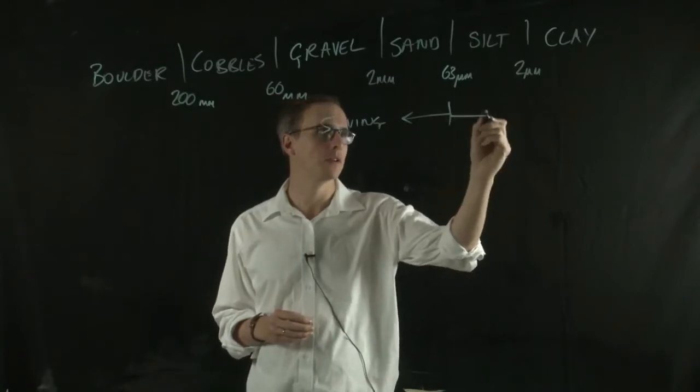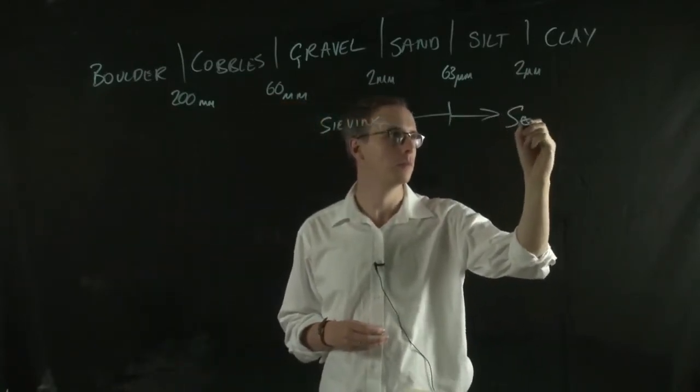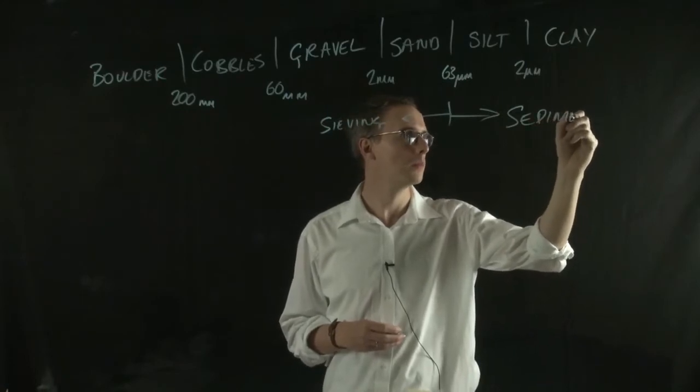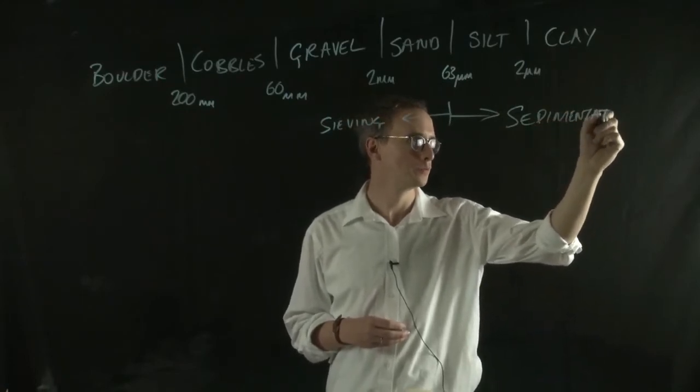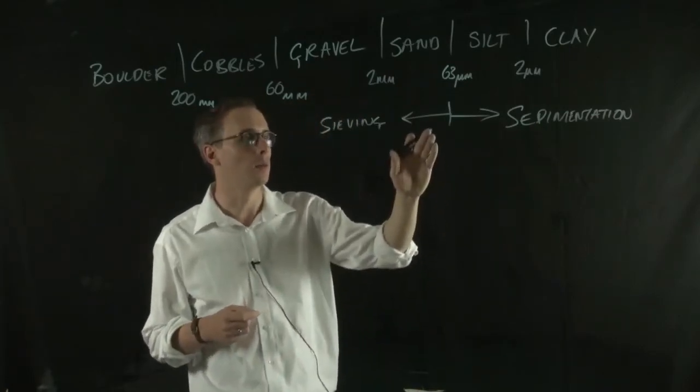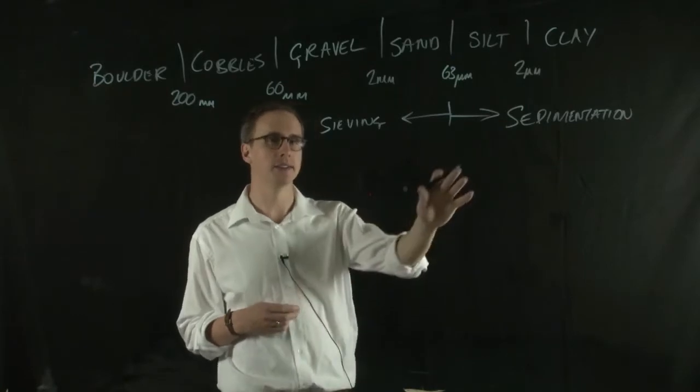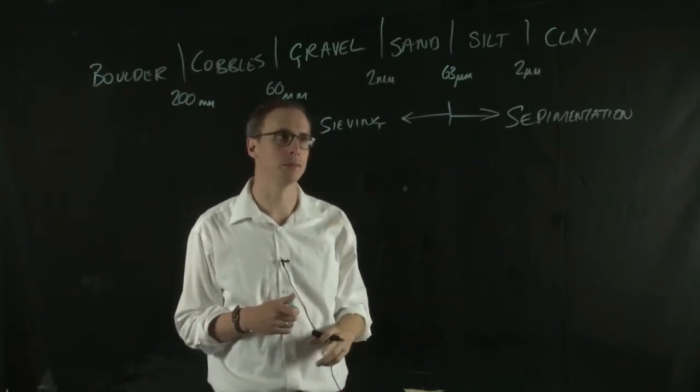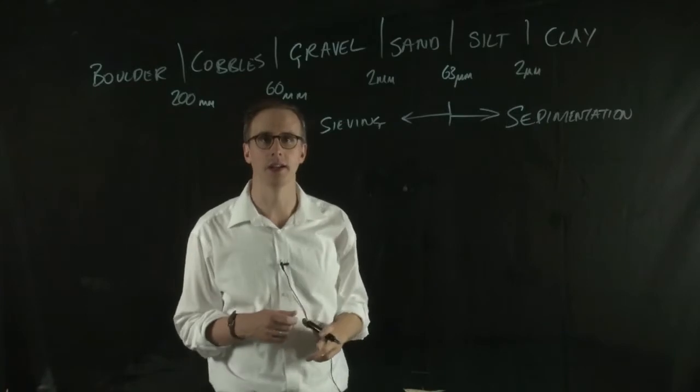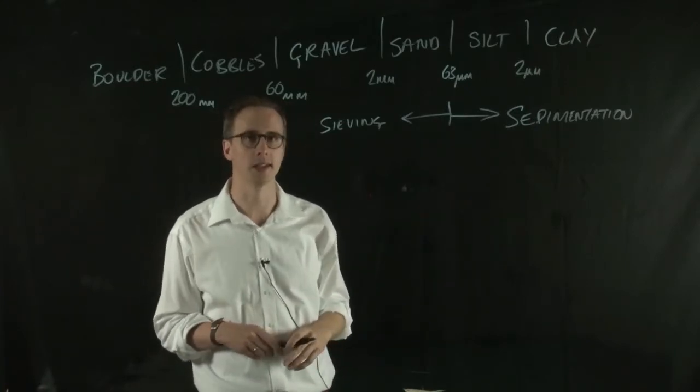Anything below 63 microns we can measure through sedimentation. That involves sieving your sample through a 63 micron sieve and then taking that fine material and immersing it in a liquid and measuring how quickly the particles settle out.